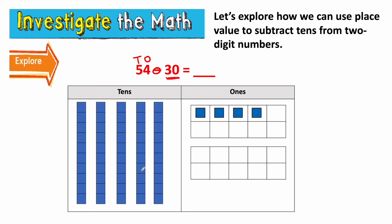Say that with me. 54, 44, 34, 24. So 54 minus 30 is 24. One way that I can subtract is by counting back.